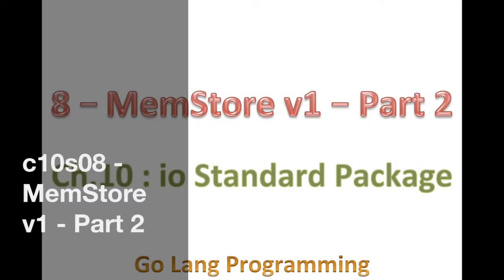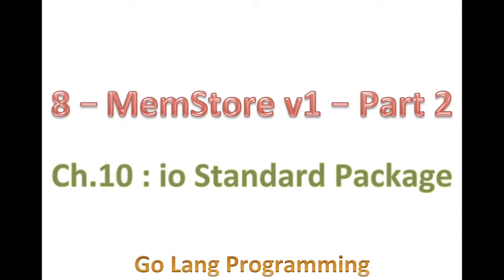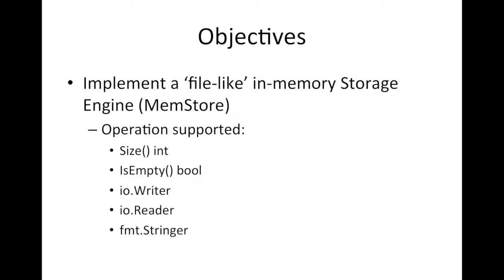Hello, good day, and welcome back. Today we're going to continue in a second part of our memory store file-like data object data type. Let's go back a little bit and remind ourselves what we were doing. We started with this thing that looks like a file — it supports these operations: you can get the size, check if it's empty, write to it, read from it, and of course it also implements fmt string or Stringer.